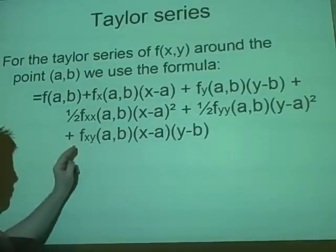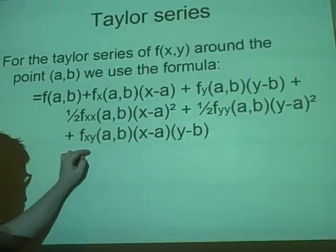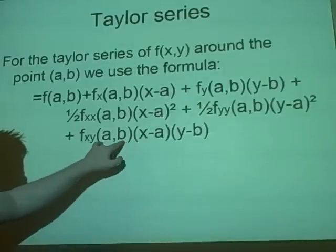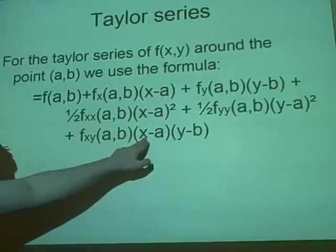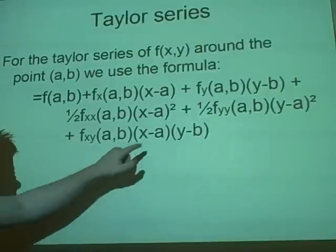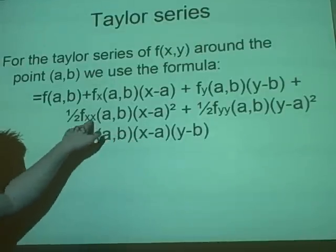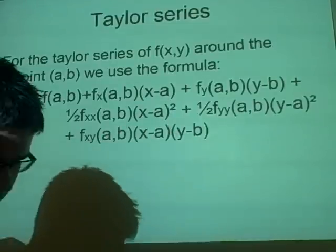Also then we have the x, y, which remember is partial derivative of x then y. And we multiply in the point again, remember. And then we have times that by x - a and y - b. So if there's an x you multiply by x - a, if there's a y you multiply by y - b. Same here. But we've got two of them so we multiply squared. And it's pretty easy to understand. Now we have an example.